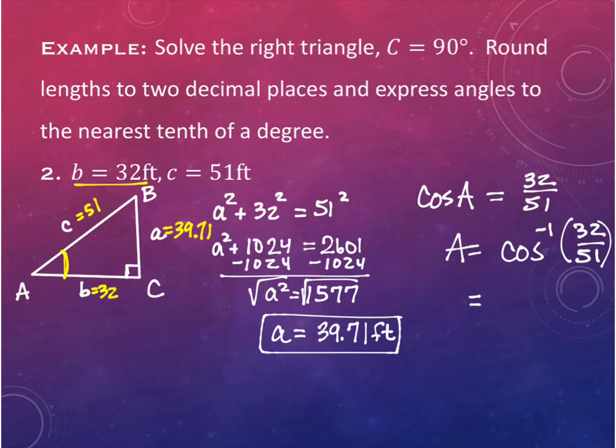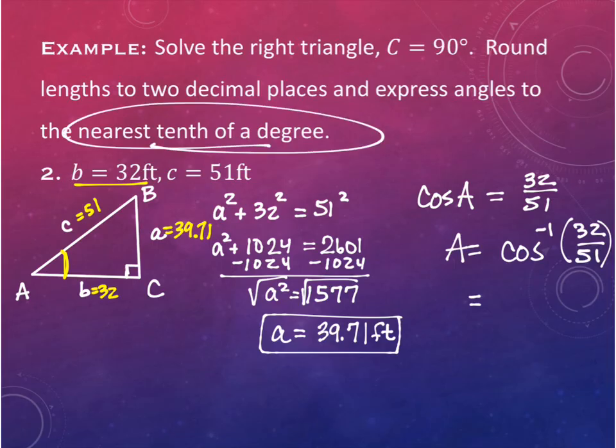The directions say to round to the nearest tenth of a degree. So doing inverse cosine of 32 over 51, angle A equals 51.1 degrees.